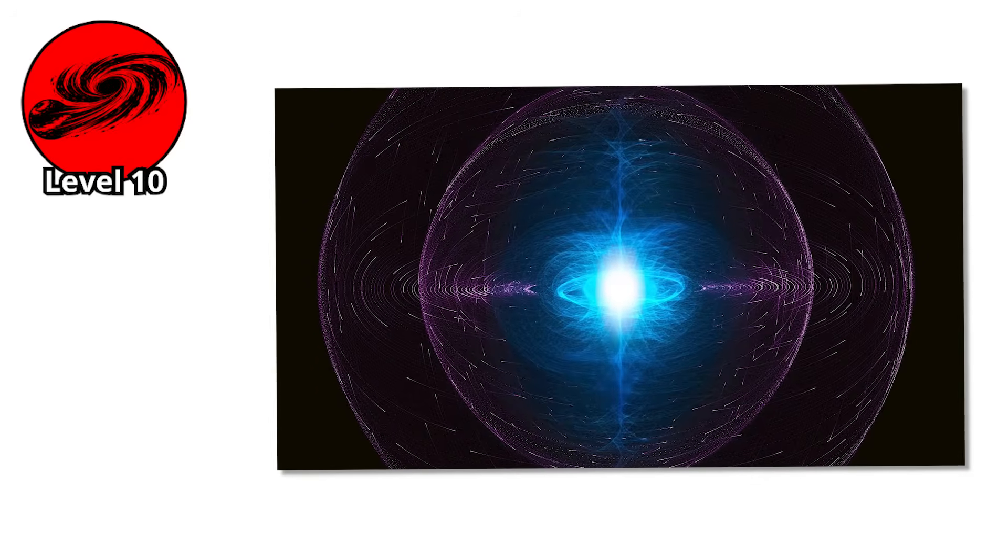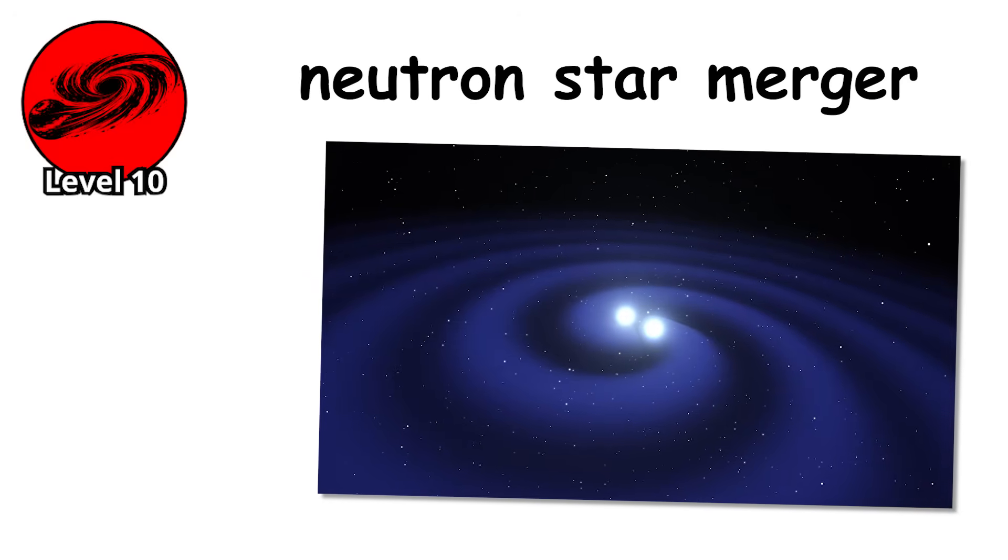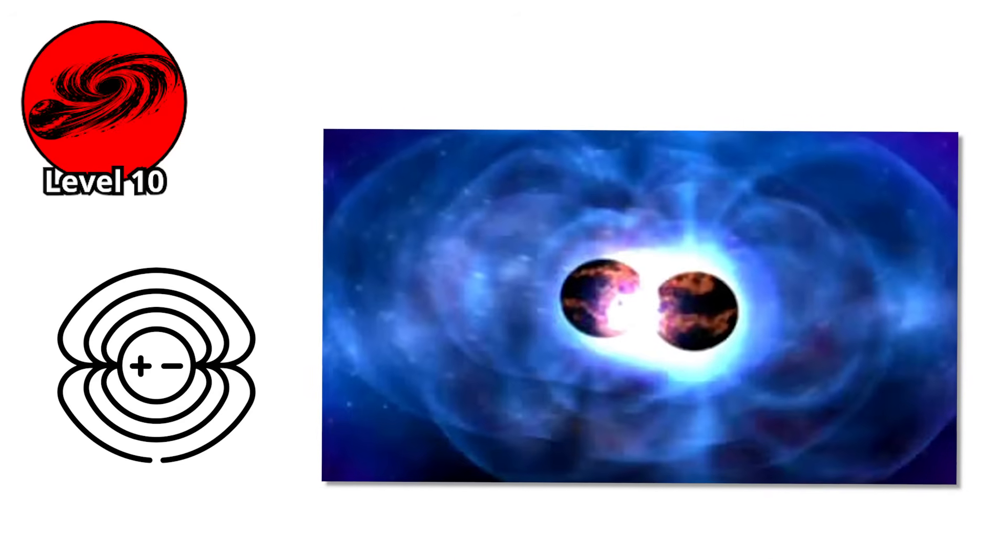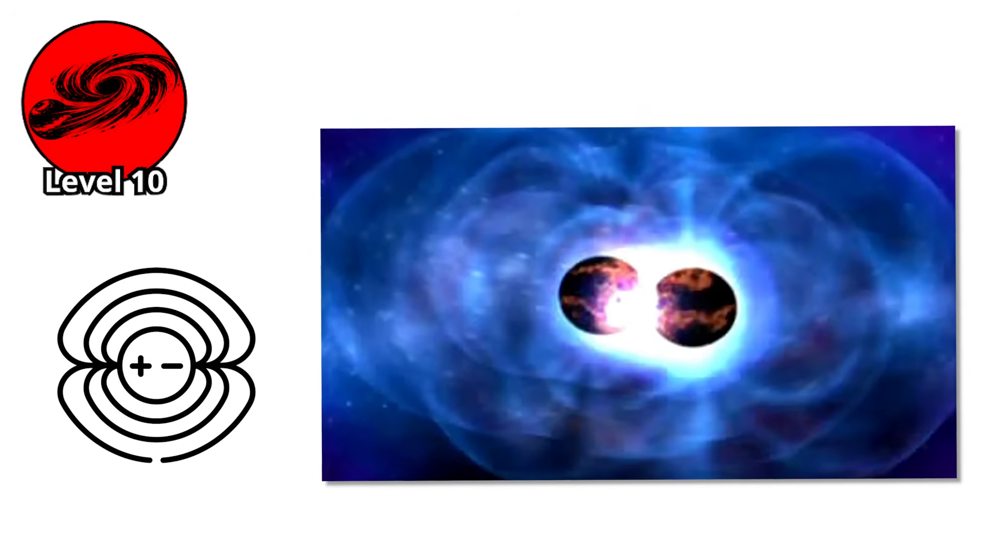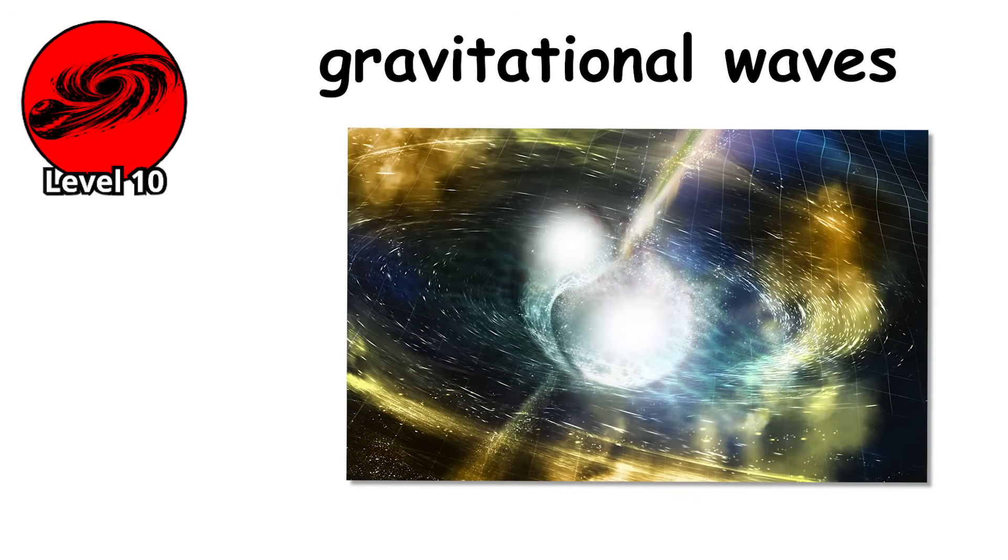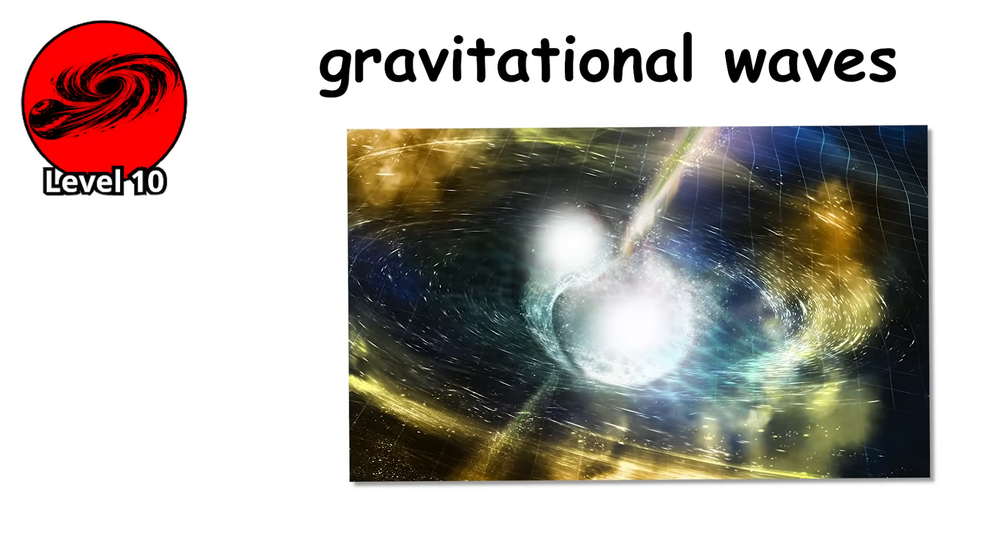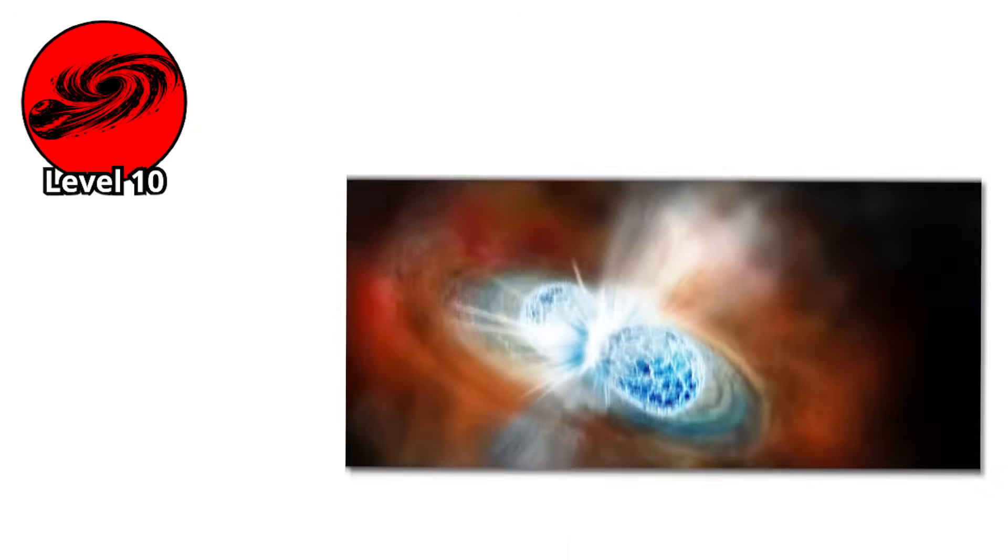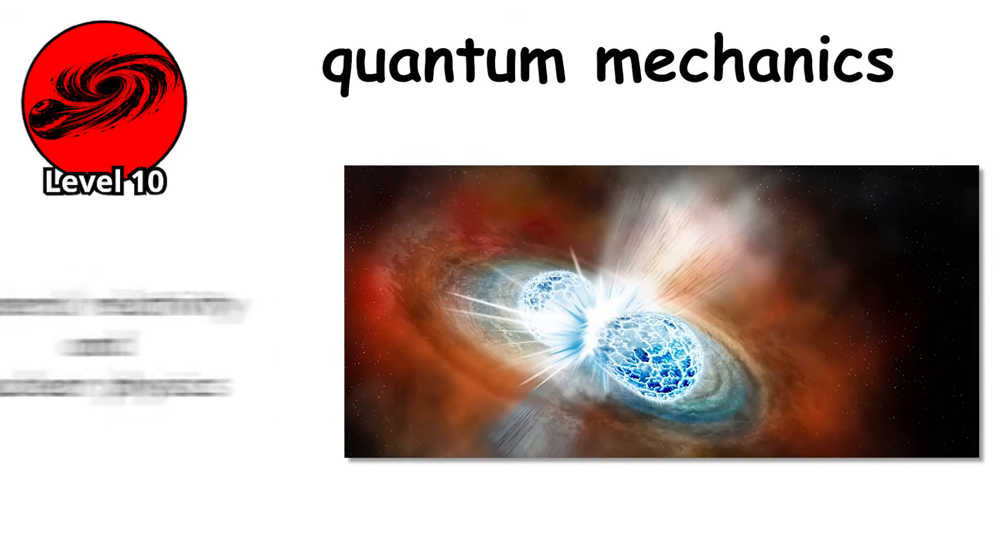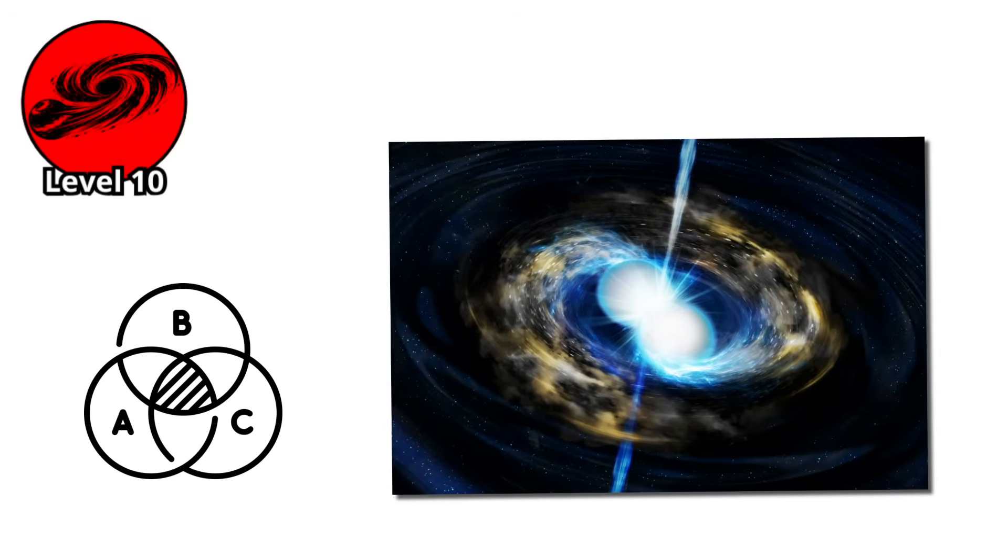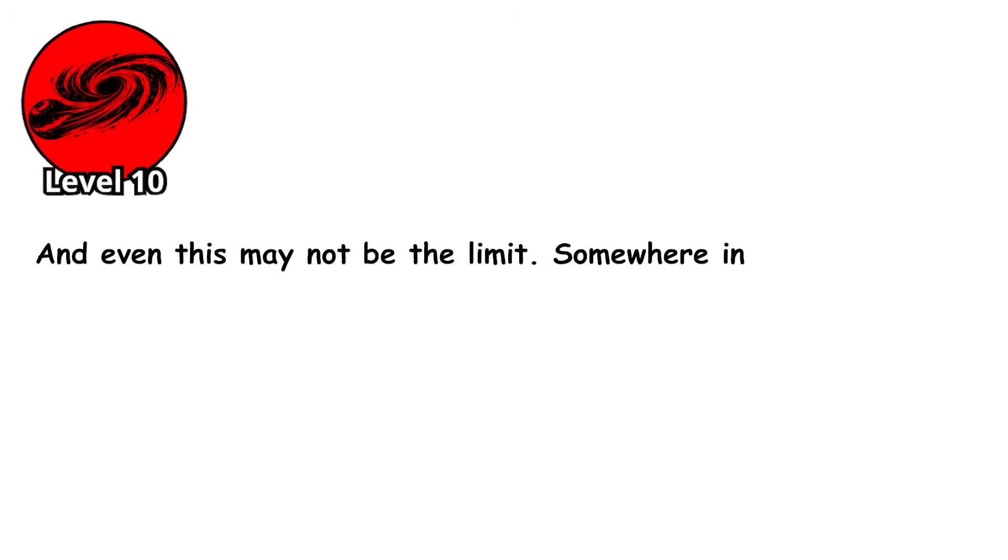And in the final seconds before a neutron star merger, when two of these ultra-dense objects spiral into each other, the magnetic fields become so intense they approach theoretical limits. These magnetar-strength fields would vaporize atoms at a distance. The gravitational waves rippling out from the merger would distort spacetime itself, creating tidal effects that would shred any planet unlucky enough to be nearby. These are storms that exist at the intersection of quantum mechanics, general relativity, and nuclear physics, phenomena we can describe mathematically but never experience. And even this may not be the limit. Somewhere in the universe, a storm is unfolding that we don't yet have the science to describe.